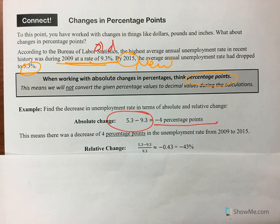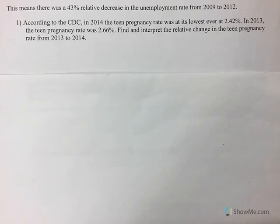But when you find the relative change — new minus old divided by old — now we've got a 43% decrease. So you can see percentage points versus percent decrease are very different. It's important that you pay attention to those things.